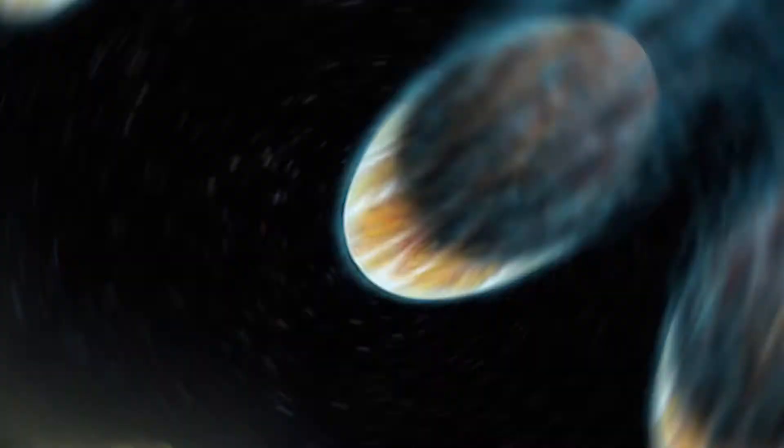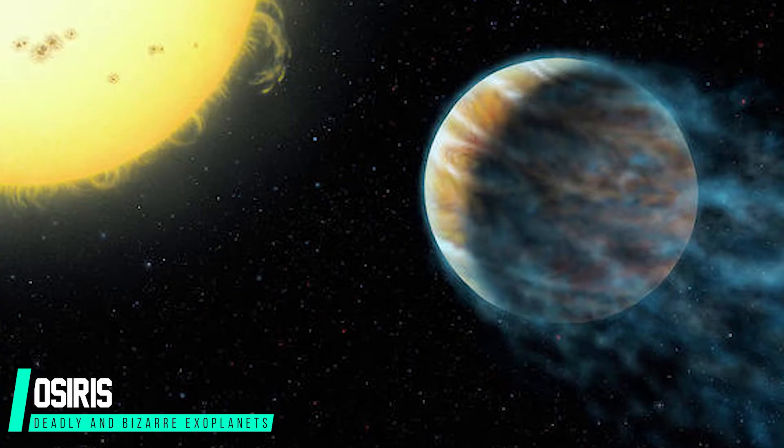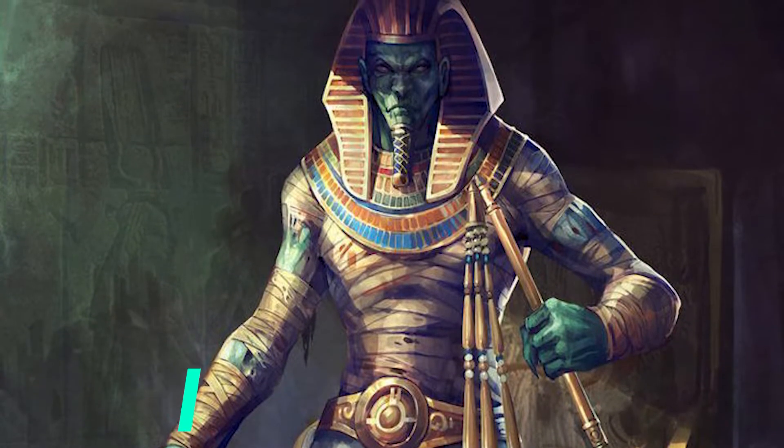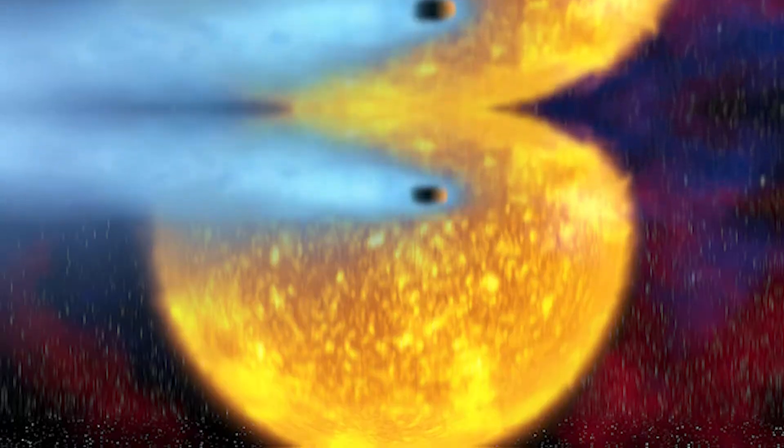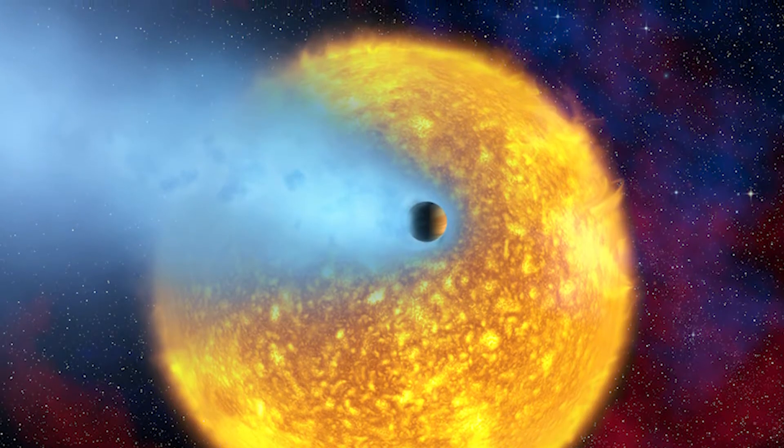Number seven. Officially named HD209458B, this hot Jupiter-type planet has been dubbed Osiris after the Egyptian god who lost part of his body after being cut up by his brother. This name comes from the fact that this is the first exoplanet discovered with an evaporating hydrogen atmosphere.